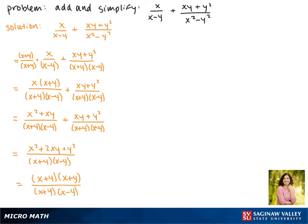Now we can cancel one factor of (x+y) from the numerator and denominator. What's left is (x+y)/(x-y), and this is our final answer.